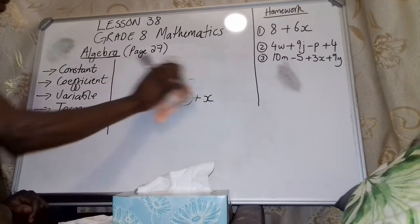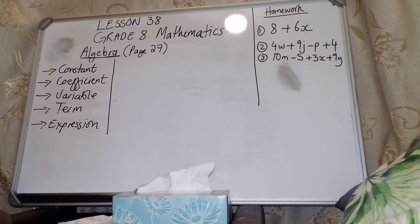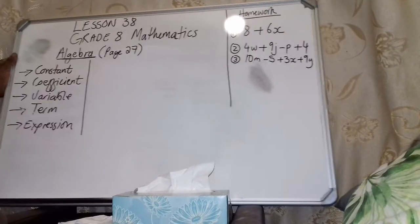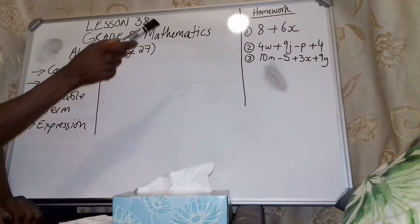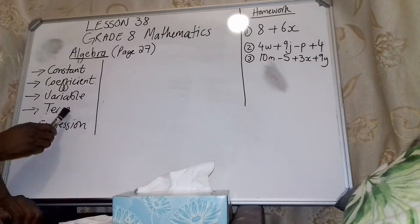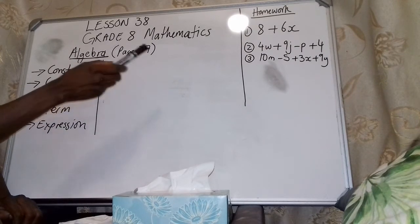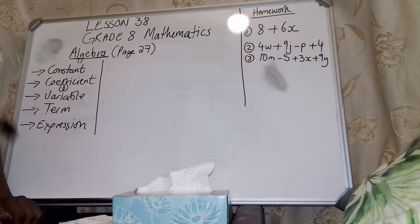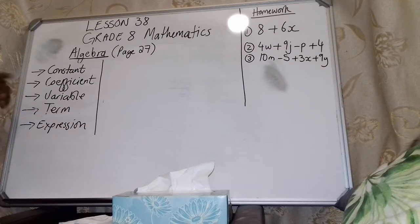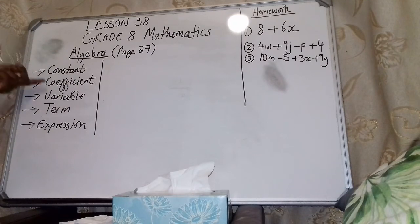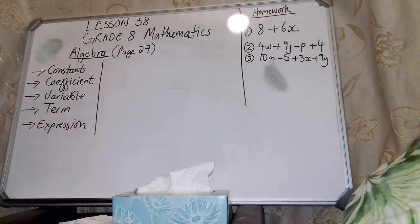For your homework, remember to write down your work, take a picture, and share with me. Number one: 8 + 6X — write down how many terms there are, the coefficients, and the constants. Number two: 4W + 9J - P + 4 — write down the number of terms, the variables, the coefficients, and the constants. Do the same for number three. Thank you for watching and see you in the next video — bye bye!